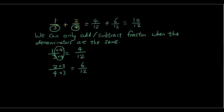So essentially, all you do is multiply both the numerator and the denominator of the first fraction by the denominator of the second fraction, and multiply both the numerator and the denominator of the second fraction by the denominator of the first fraction. In that case you get four over twelve plus six over twelve, which is ten over twelve.